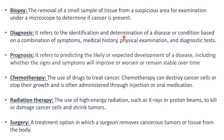Diagnosis is the identification and determination of the disease — you combine symptoms, medical history, physical examination, and diagnostic tests to determine the disease. The difference between diagnosis and prognosis: diagnosis is where you identify the disease, while prognosis is where you predict whether the patient's condition will improve or worsen over time. Prognosis refers to predicting the likely development of a disease, including whether signs and symptoms will improve, worsen, or remain stable.